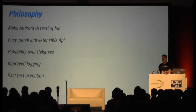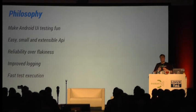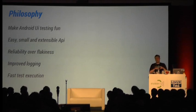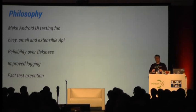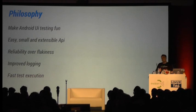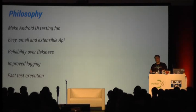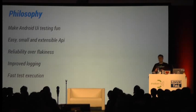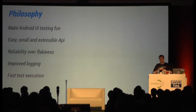Why did we develop Espresso? Basically there are two answers. The first is that the existing API is very low-level — you need a lot of knowledge just to write a basic UI test, and there's a lot of boilerplate code. The second problem is that if you have 1,000 tests or more, unreliability and performance definitely become a problem if you don't handle synchronization correctly. These were the two problems Espresso tries to solve, with an easy, small, and very clean API and fast, reliable test execution.